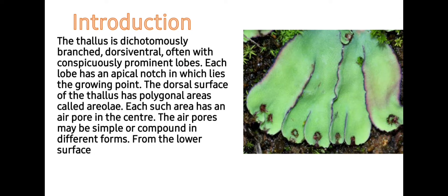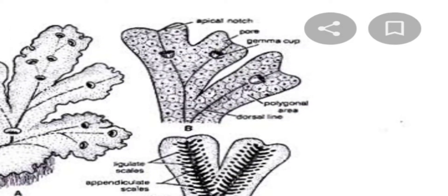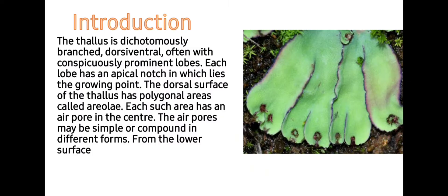Students, you know very well the thallus in members of Marcantiales is dichotomously branched, dorsiventral, and often with conspicuously prominent lobes as you can see in this image. Each lobe has an apical notch in which lies the growing point. The dorsal surface of the thallus has polygonal areas called areolae, and each such area has an air pore in the center. The air pores may be simple or compound in different forms.